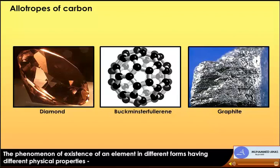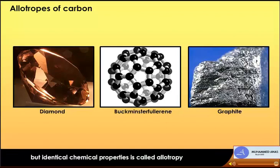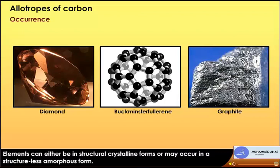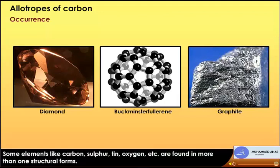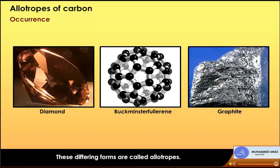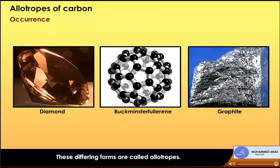Allotrope of carbon: the phenomenon of existence of an element in different forms having different physical properties but identical chemical properties is called allotropy. Elements can either be in crystalline forms or in amorphous form. Some elements like carbon, sulfur, tin, oxygen, etc. are found in more than one structural form. These differing forms are called allotropes. In crystalline form, pure carbon is found as graphite, diamond, and buckminsterfullerene. Diamond and graphite are chemically identical and consist of only carbon atoms.